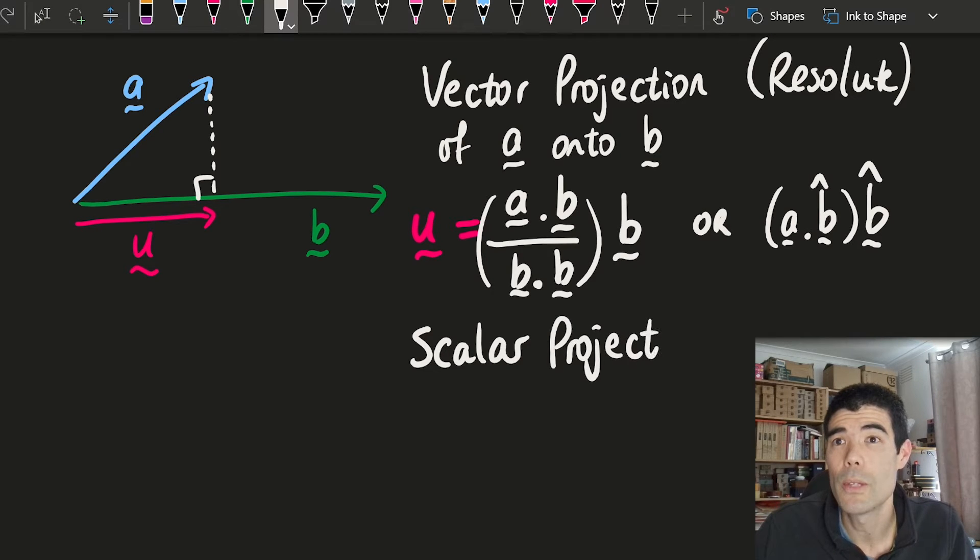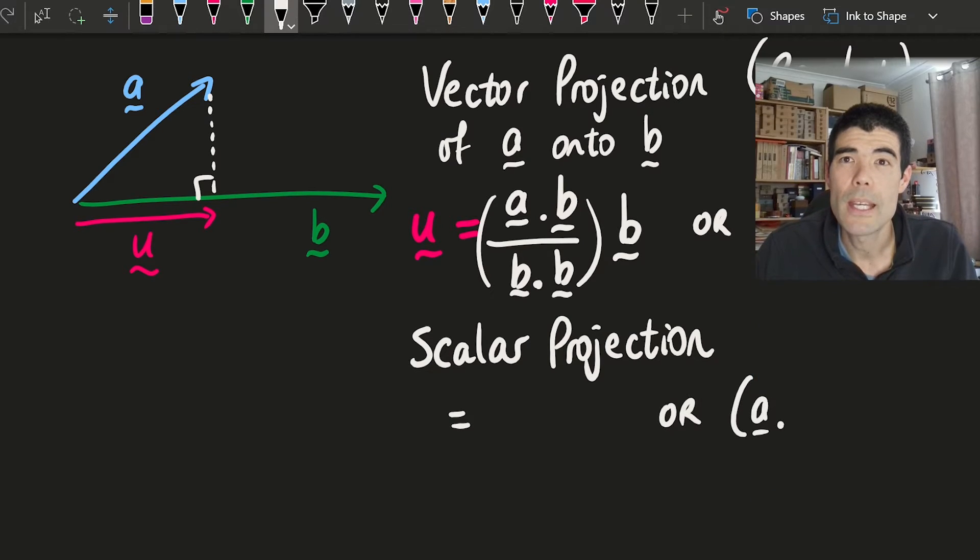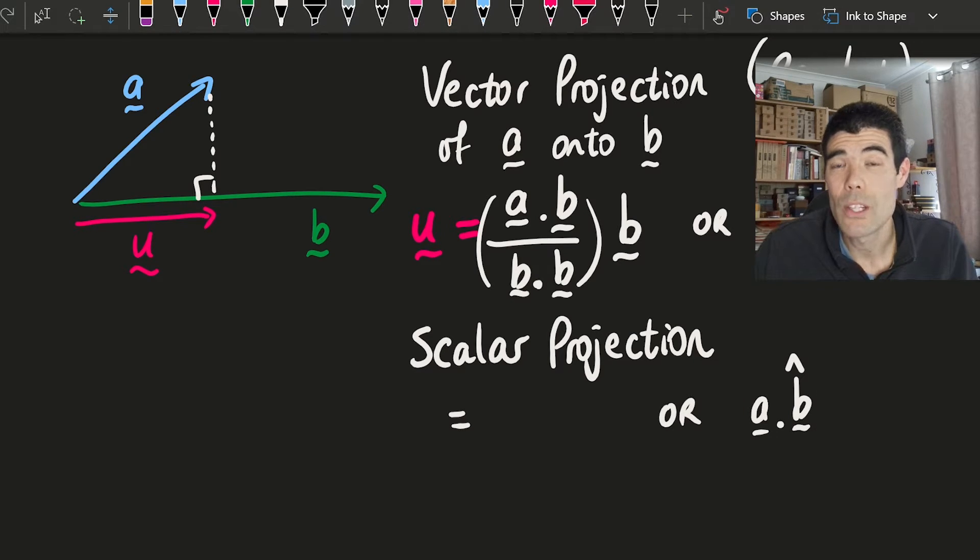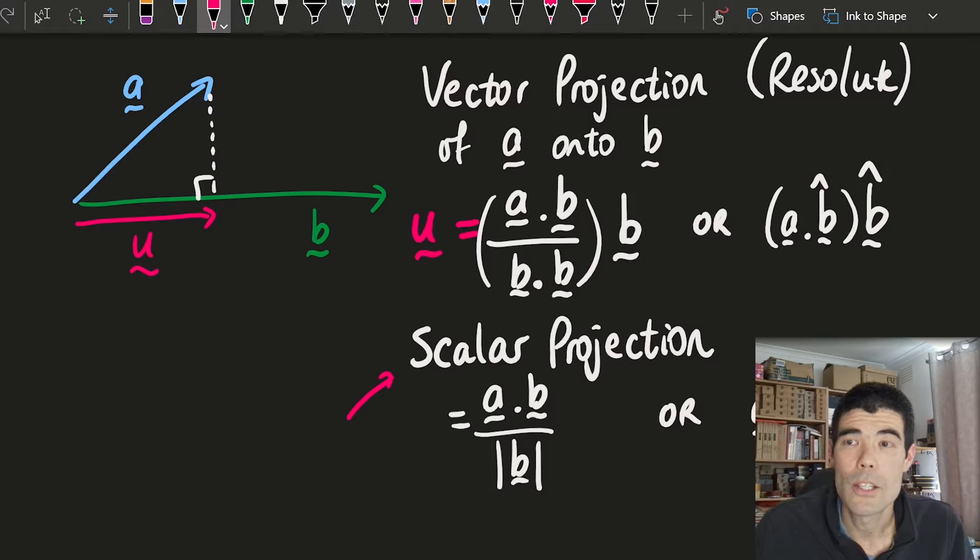Before we talk about where the formula comes from, let's look at what we call the scalar projection or the scalar resolute. Essentially, that is the length of the vector resolute. It's probably easiest to understand using the second formula because a unit vector has length one. Then the length of that one is just going to be a dot unit vector of b. In the first form, a dot b over the length of b. Just one thing to keep in mind that the scalar projection, even though I said it was a length, can actually be negative if the vectors are pointing in opposite directions. We'll have a look at that in the example.